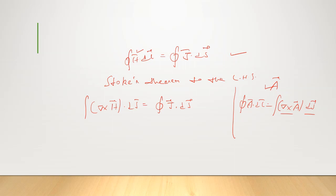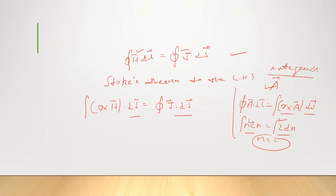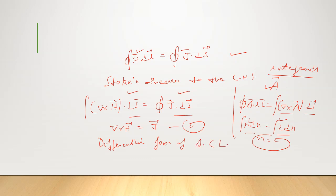Two surface integrals are equal only if their integrands are equal — just as ∫x ds = ∫2 dx implies x = 2, so x and 2 are the integrands. Therefore, ∇×H = J. This is equation number two, and this is the differential form of Ampere's circuit law.